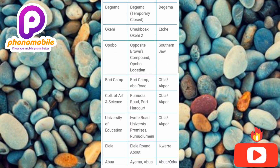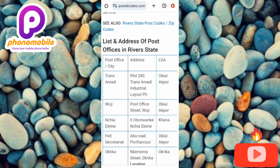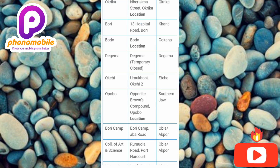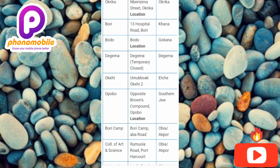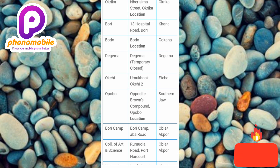You can see there are so many post offices listed. What you need to do is search for the post office closest to where you live — in your state and local government area. Once you find it, copy the address. Then go over to your Google AdSense account and change your payment address from the former one to this post office address. With this post office address, you'll be able to receive your mail faster.